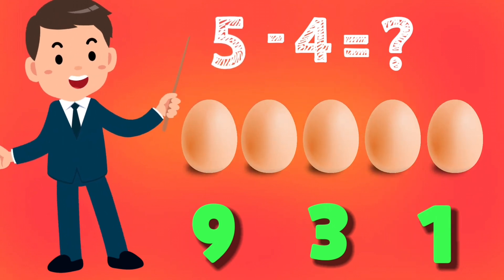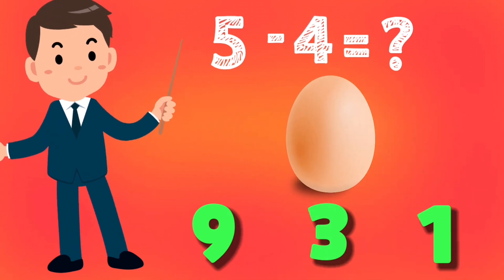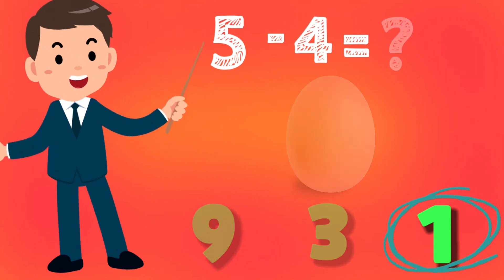Five eggs minus four eggs. Let's count the remaining items: one. The answer is one.